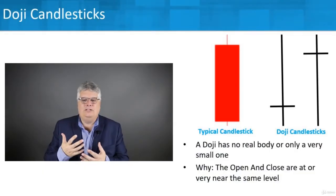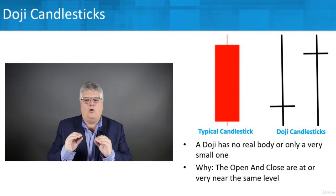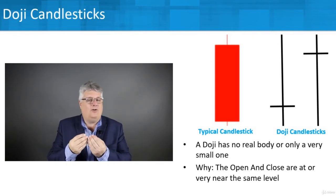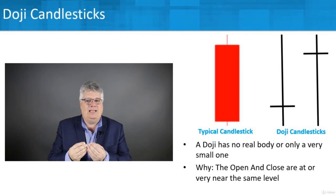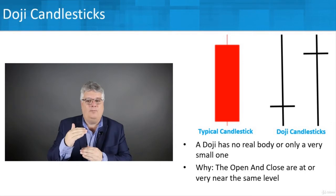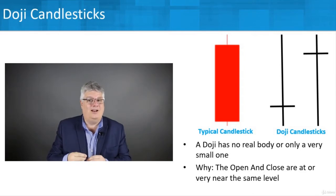A doji is a situation where a candlestick has no real body or only a very small one. That happens because the opening price and the closing price are at or very near the same level. On a typical candlestick you have a good-sized real body — the rectangle part — with a wick at both the top and bottom, called an upper shadow and a lower shadow.